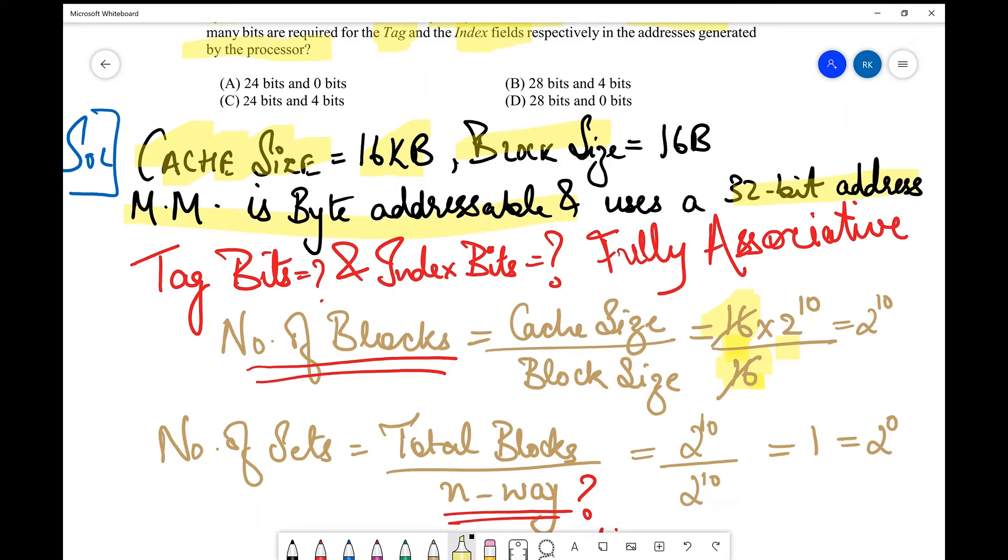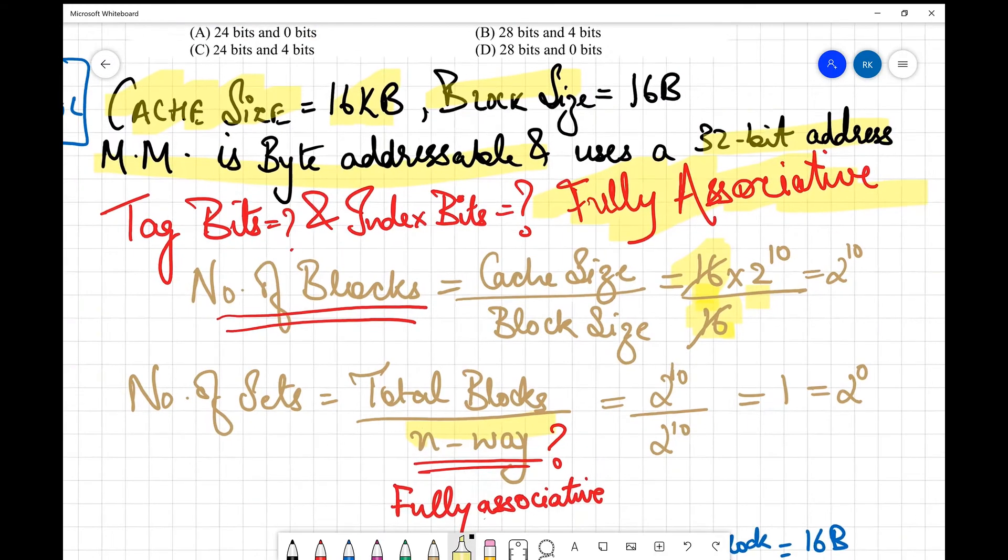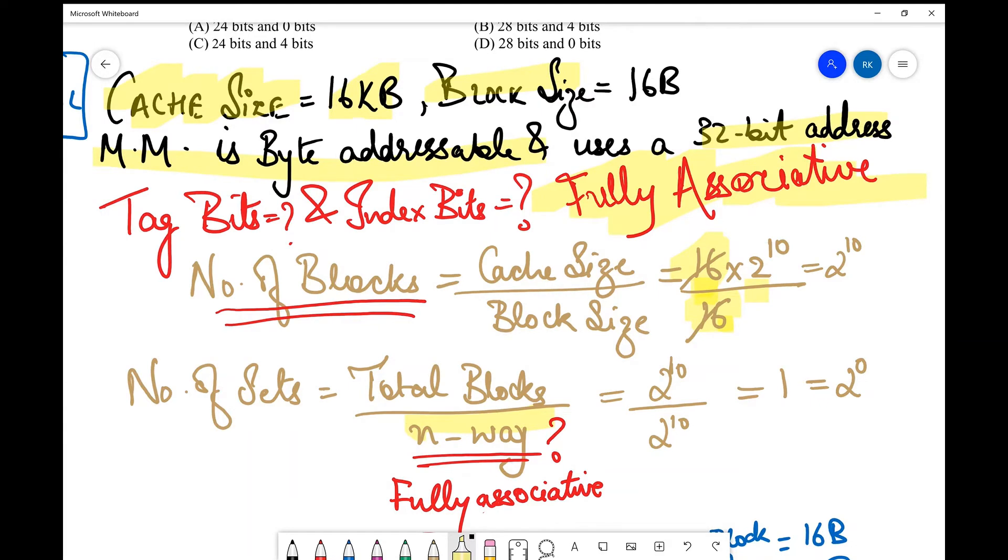Now the next thing is computing the number of sets. The general formula is total number of blocks divided by n-way for the set associative thing. Generally it is given as 2-way associative or 3-way associative, but here in the question it's given as fully associative. When they say fully associative, we actually take the denominator or the n-way thing as equivalent to the number of blocks, because we are associating each and every block with a particular associativity.